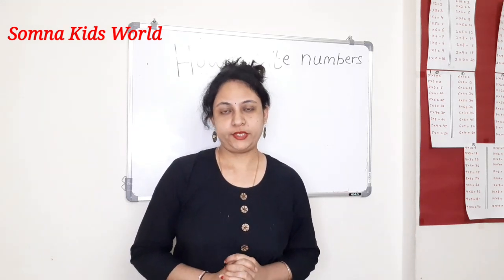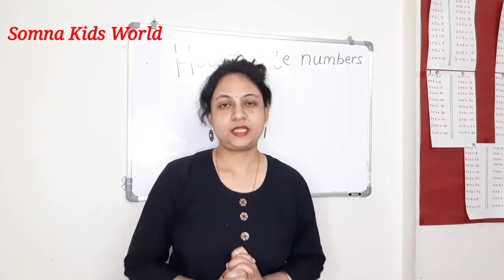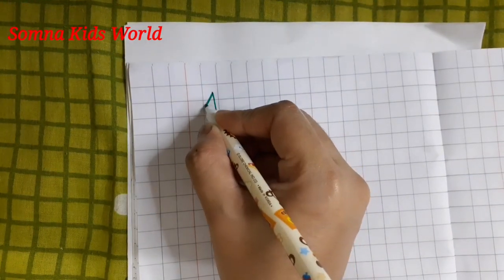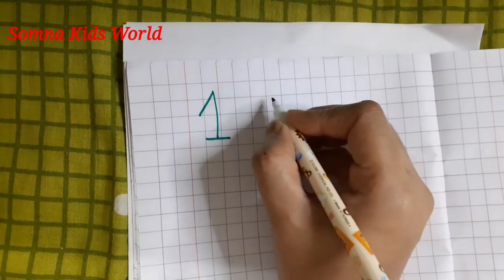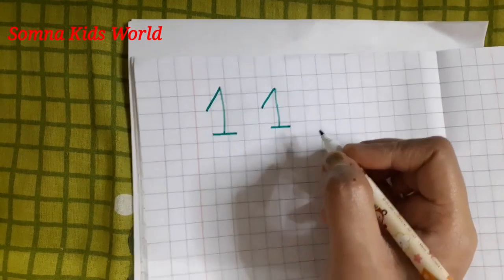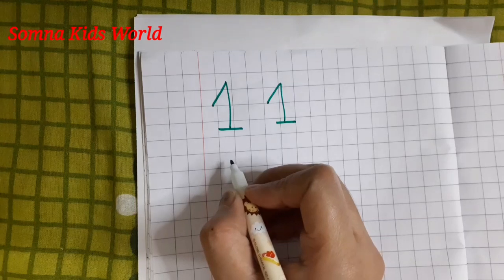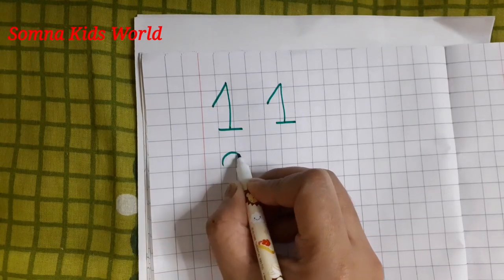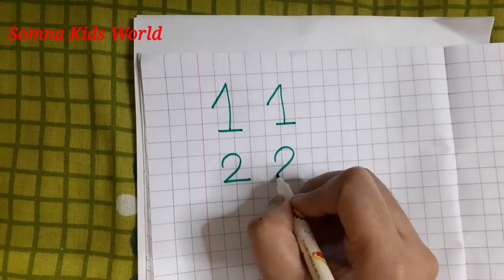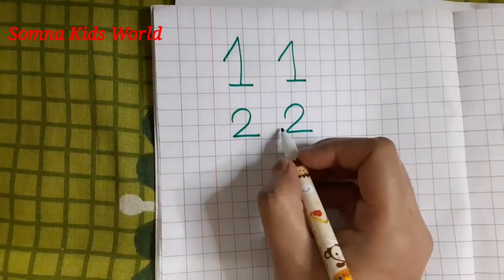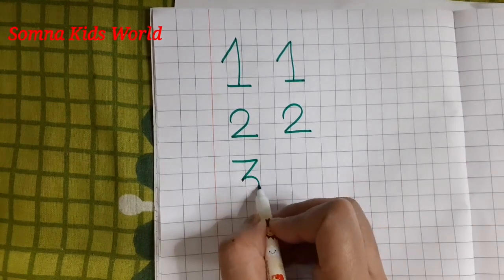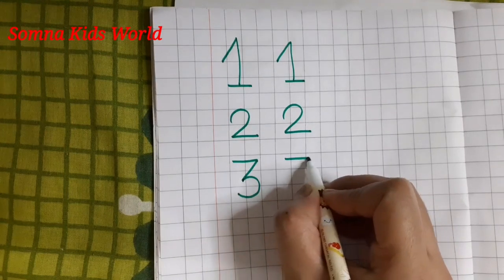Now I'm going to show you from number one to number ten. Number one: standing line, slanting line, slipping line. Standing line, slanting line, slipping line. What comes after number one, children? It's number two: curve, slipping line. Make a curve, slipping line.